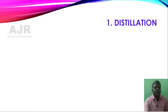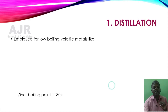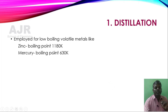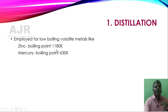First, I am going to explain distillation. This method is employed for low boiling volatile metals such as zinc and mercury. Zinc has a boiling point of 1180 Kelvin, while mercury has a boiling point of 630 Kelvin.